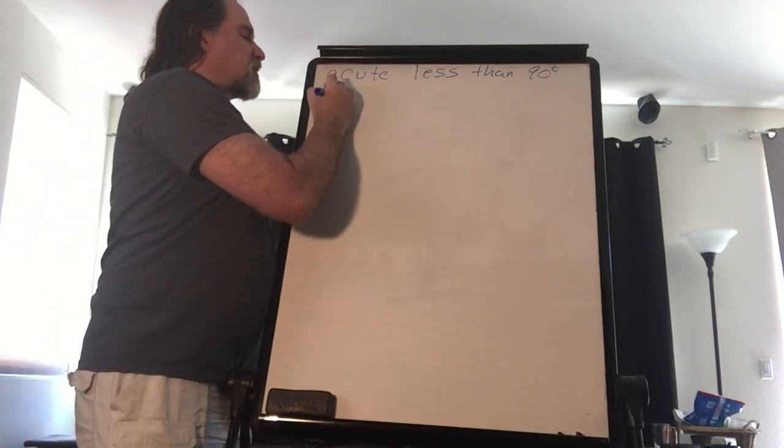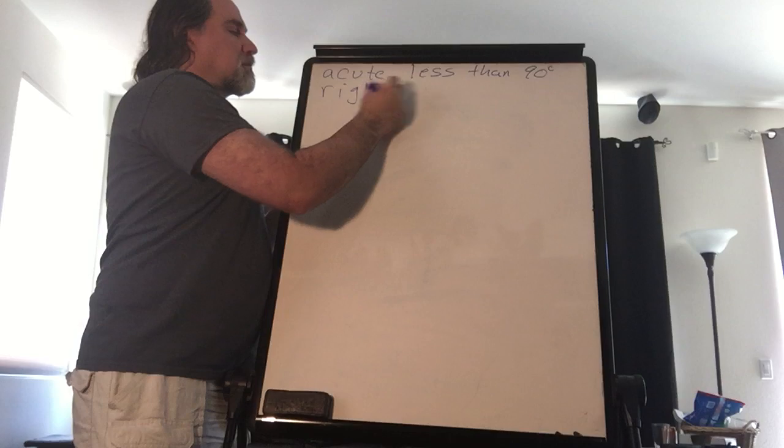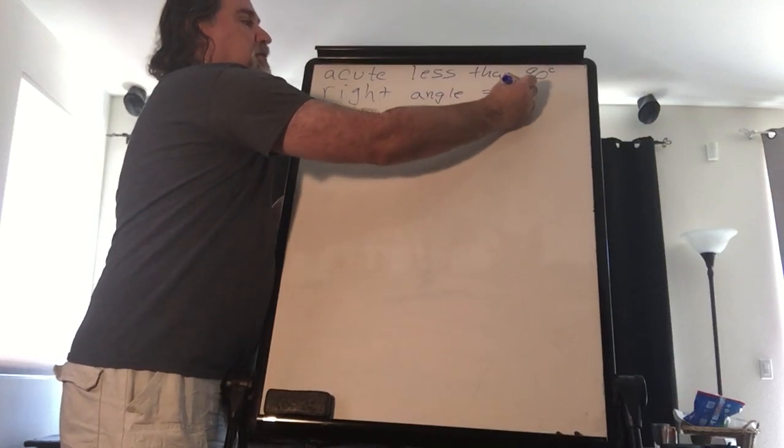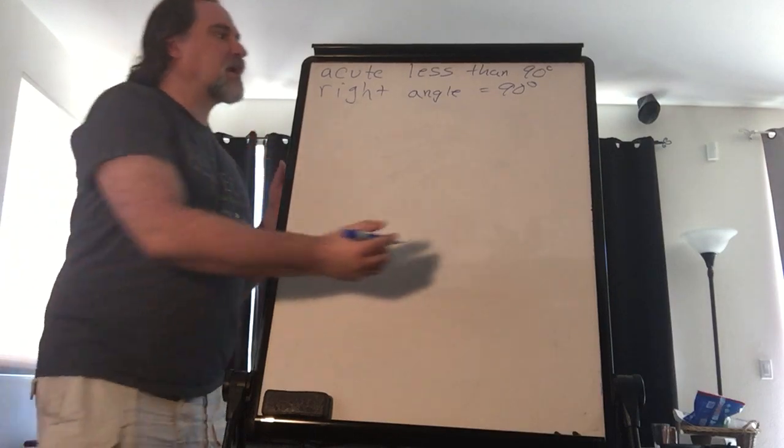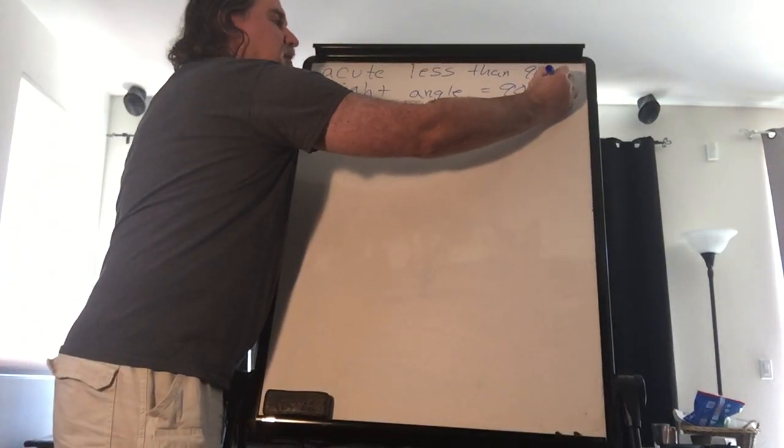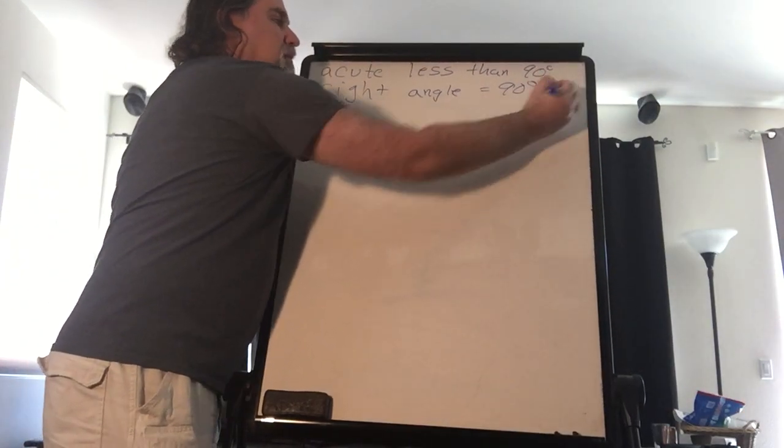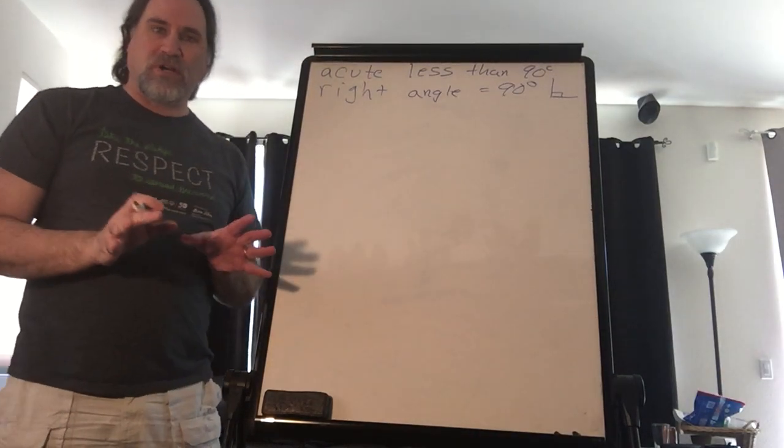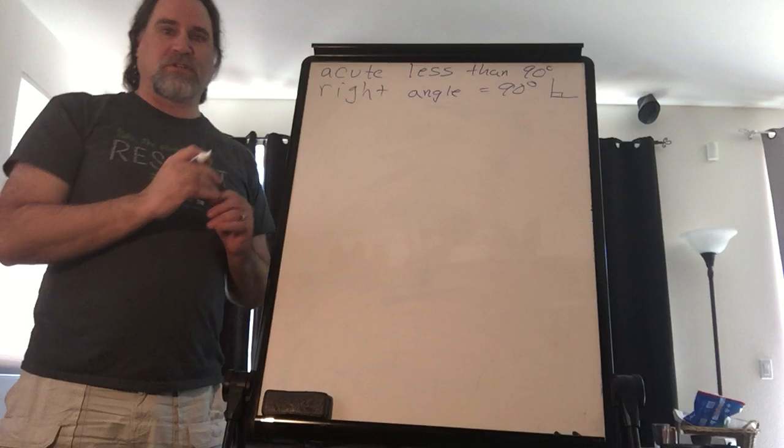Which leads us to the next one which would be a right angle and that's exactly 90 degrees. That's indicated by a little box and that tells us that that's a 90 degree angle.